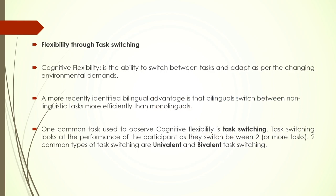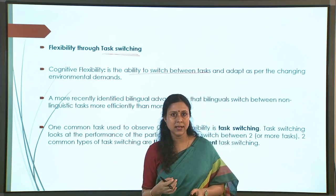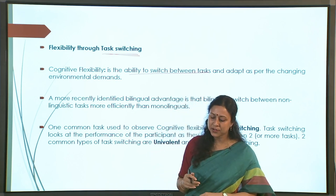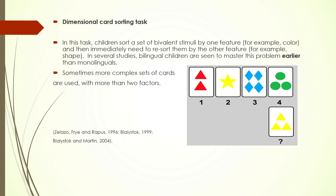We also have a different kind of paradigm called task switching, which checks the cognitive flexibility of participants through various kinds of task switches. Task switching checks the ability to switch between tasks and adapt to changing demands in the environment. The measurement is: when there is no switch versus when there is a switch between two different tasks, do you take the same amount of time or more time? There are two kinds of task demands: univalent and bivalent.